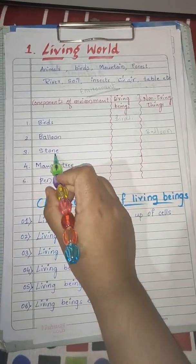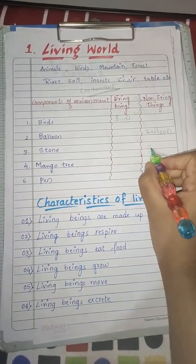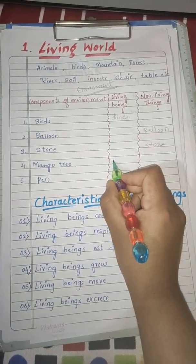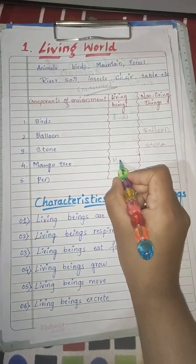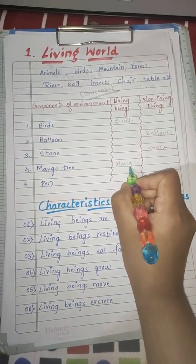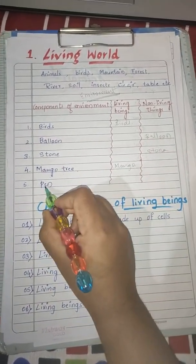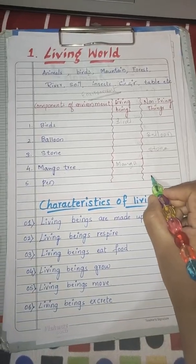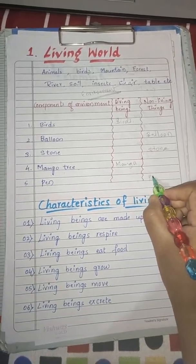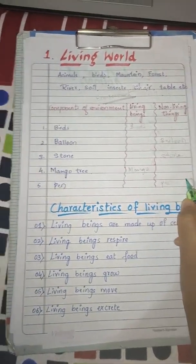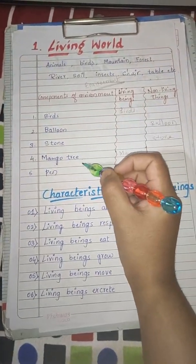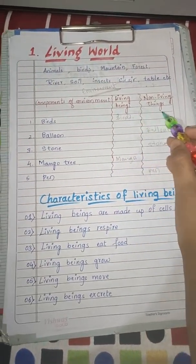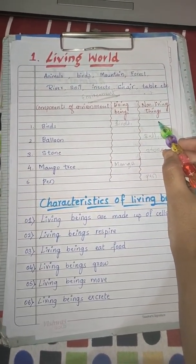Next one, stone — stone is a non-living thing. Mango tree — mango tree is a living being. Next, pen — pen is a non-living thing. So we have classified the things into living beings and non-living things.